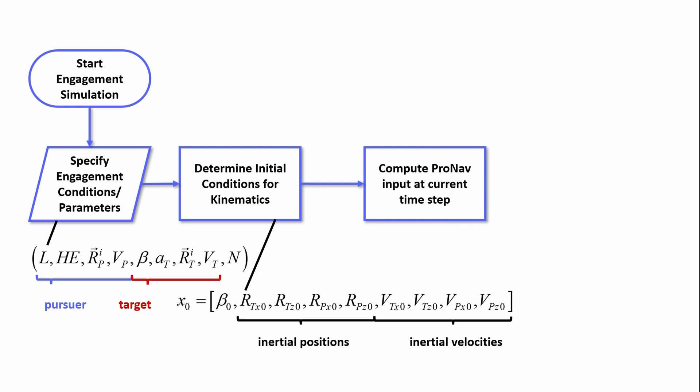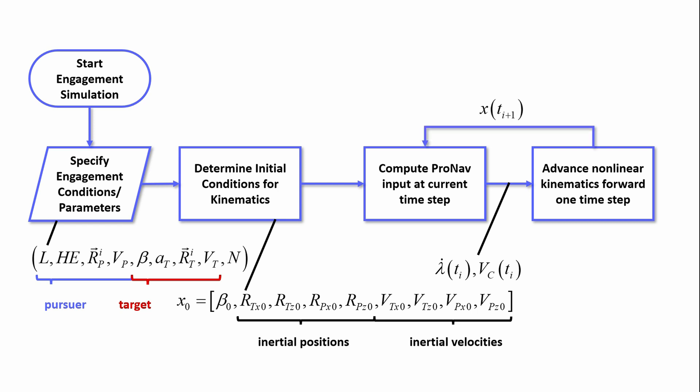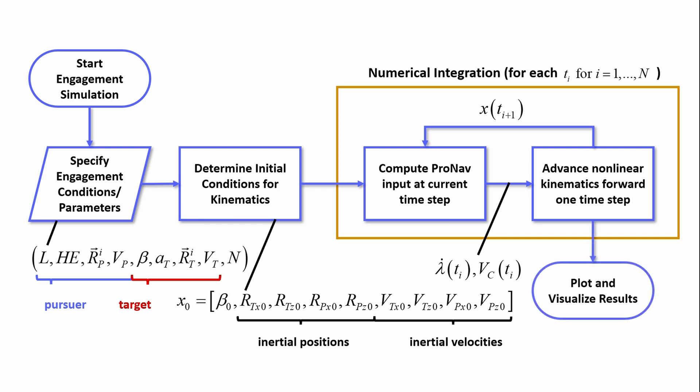That data starts with an initial input to the ProNav law: line of sight rate, target acceleration, closing velocity. That's used to integrate the nonlinear kinematics forward one time step. That updated engagement data is fed back into the ProNav law, which is used to integrate the kinematics forward another time step. And this process continues until the final time, at which we post-process by visualizing or plotting the results of the engagement.